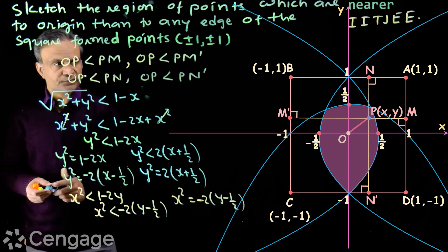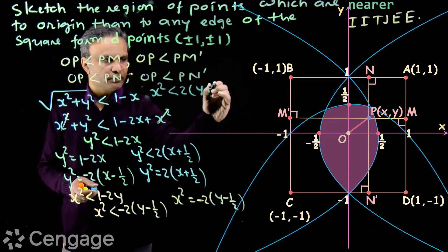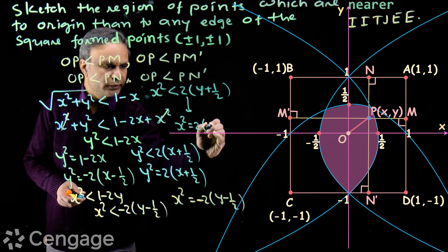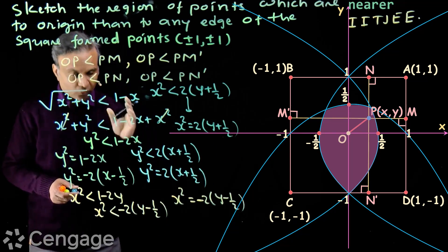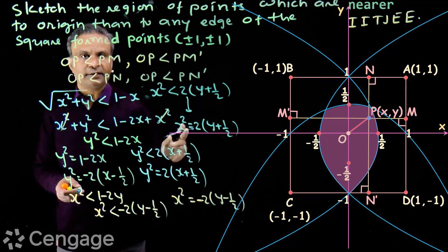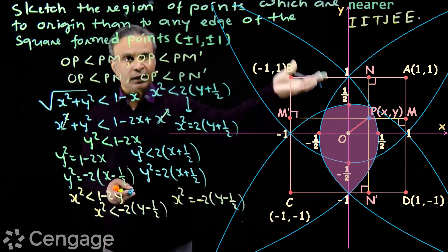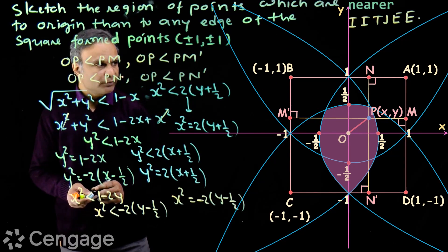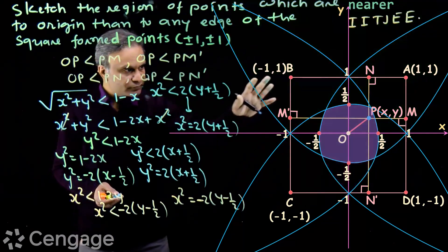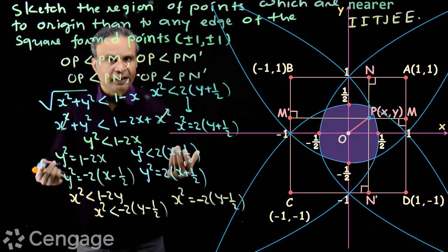From the last inequality, OP < PN', we get x² < 2(y + 1/2). Point P lies in the interior region of the parabola x² = 2(y + 1/2), whose vertex is at (0, -1/2). It intersects the x-axis at (1,0) and (-1,0), and opens upward because the coefficient is positive. Finally, we have the common region — the intersection of the interior regions of all four parabolas.